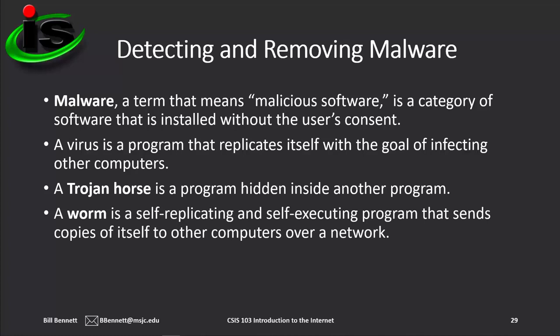Another threat is a worm, which is a self-replicating and self-executing program that sends copies of itself to other computers over a network. Unlike viruses, a worm can replicate itself on a computer or server, but it cannot attach itself to other files. Many worms arrive as email attachments. When the user opens the attachment, the worm infects his or her computer and then quickly attempts to send itself to email addresses stored in the user's address book.